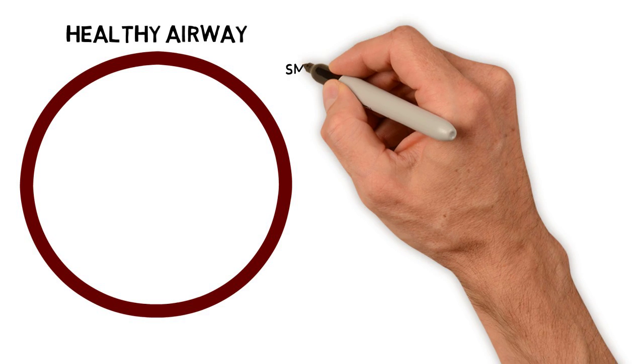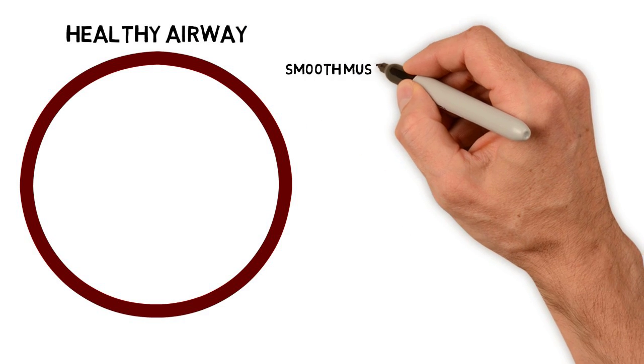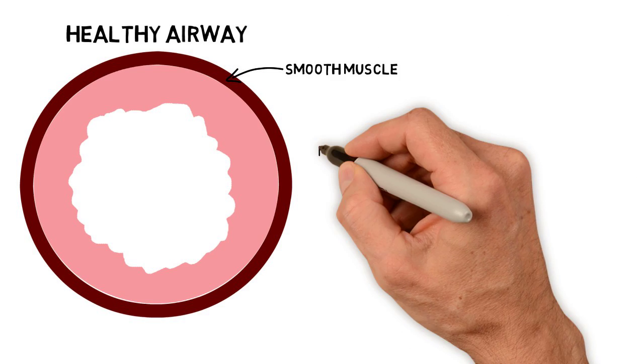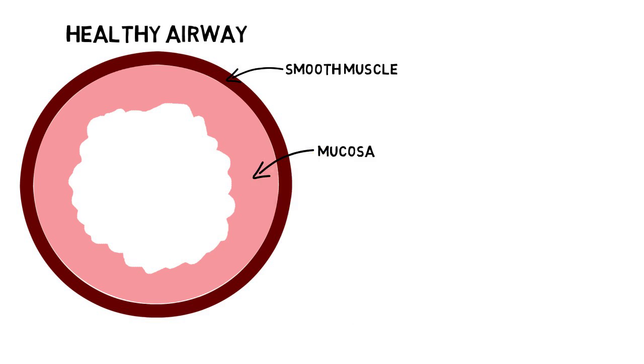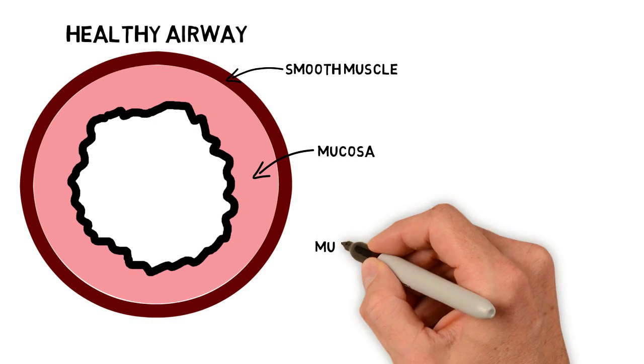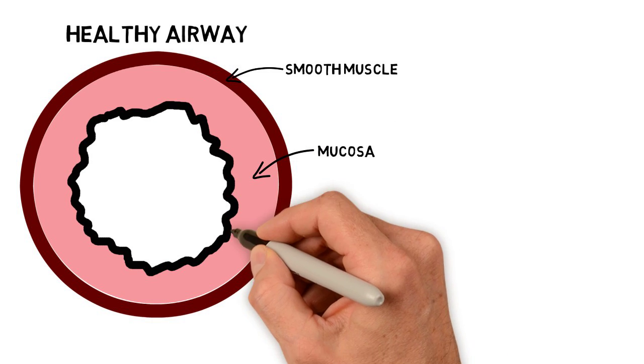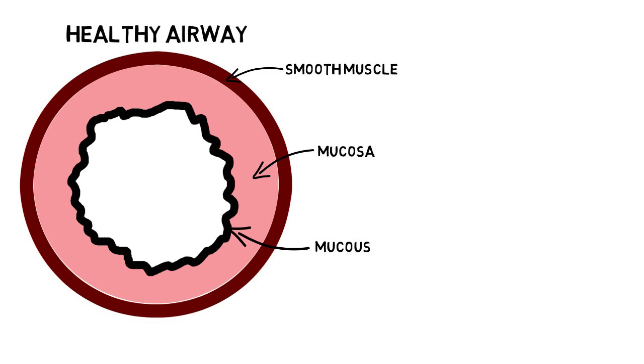Normal small airways are composed of a smooth muscle cell ring, mucosa, and mucus, which is produced by cells in the mucosa.